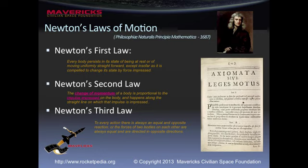Newton's first law basically says: every body persists in its state of being at rest, or of moving uniformly straightforward, except insofar as it is compelled to change its state by force impressed. Translating that into common English: every object that is at rest, or moving uniformly in a straight line, will stay at rest or stay moving uniformly in a straight line — uniformly meaning at a constant velocity — unless a force is acted upon it. If a force acts on it, we're going to see a change, either in its state of rest, its direction, or its velocity might increase. Pretty straightforward.